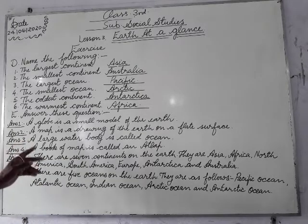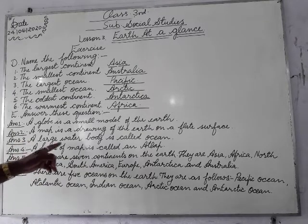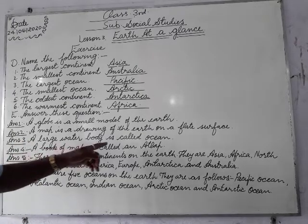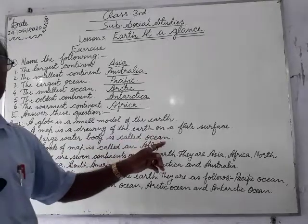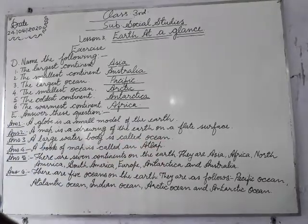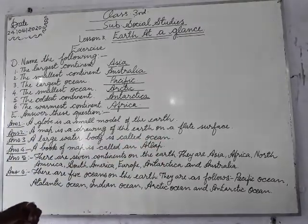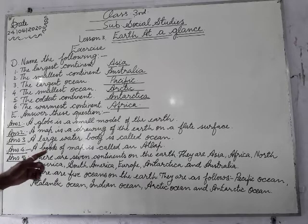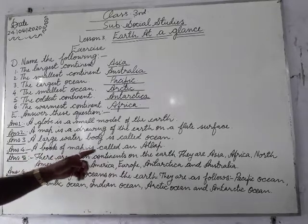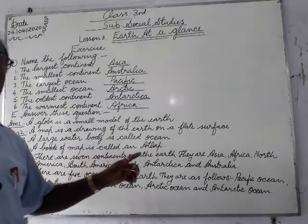Number three: The large water body is called an ocean. Number four: A book of maps is called an atlas.